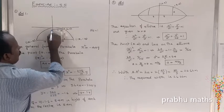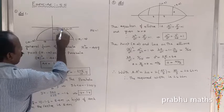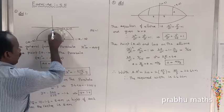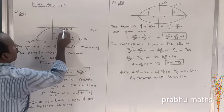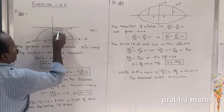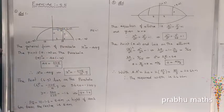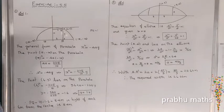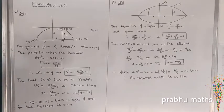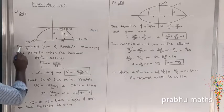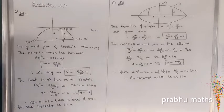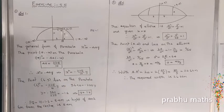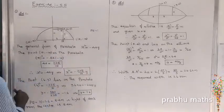If x equals 6, we will substitute to find the height. This is a downward open parabola. The general form of the downward open parabola is x squared equal to minus 4Ay.